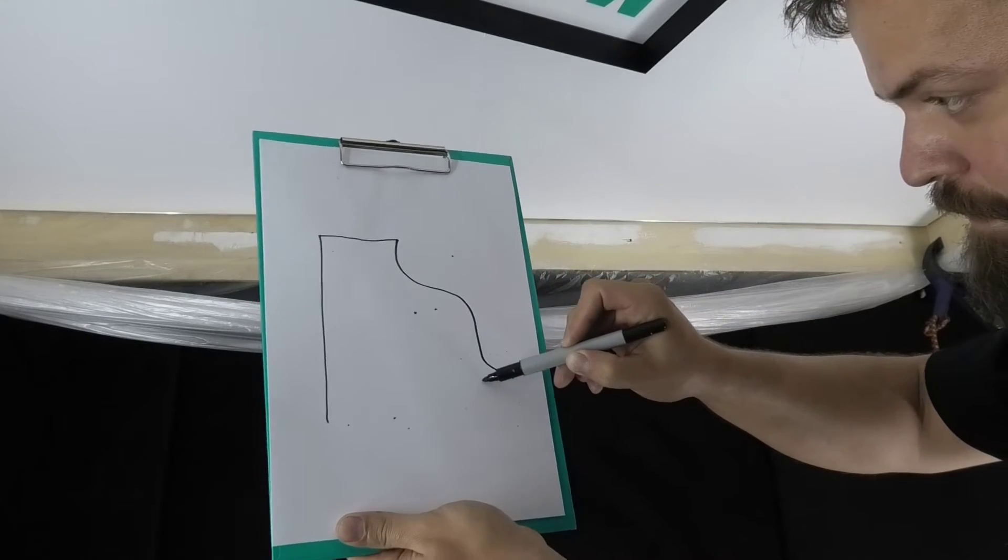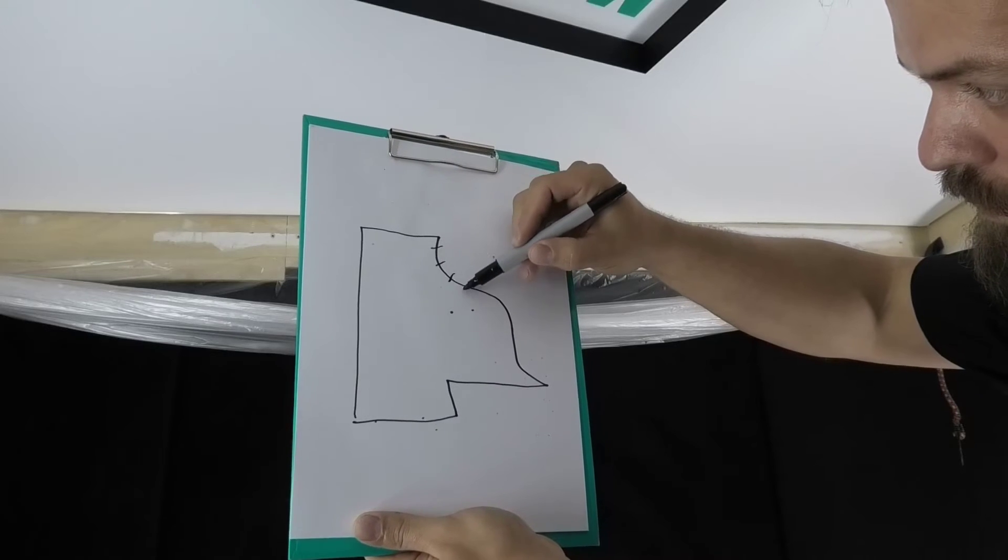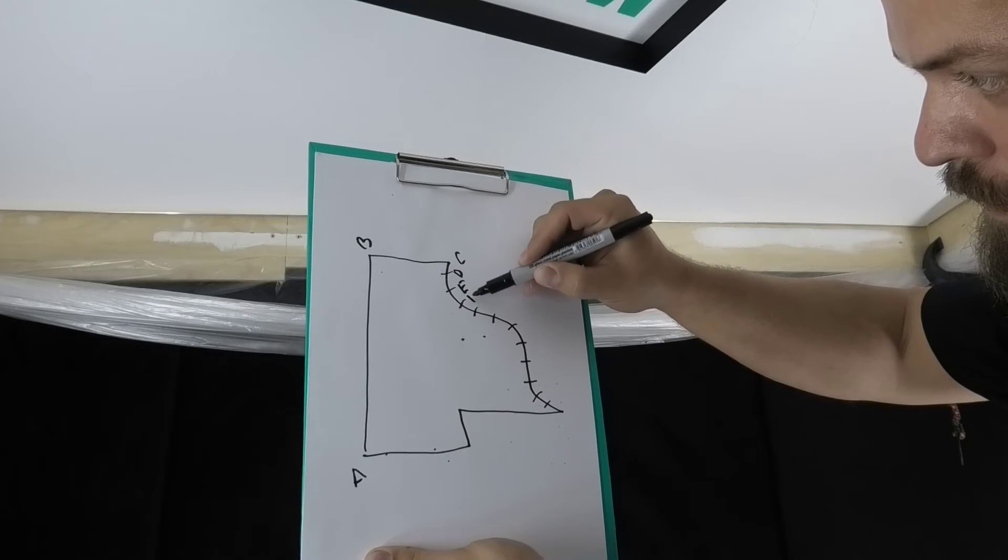If there is a curved wall in the room, then we divide it into segments. The length of the segments depends on how sharp or smooth the curvature of the wall is. We mark each corner with a letter in alphabetical order clockwise.